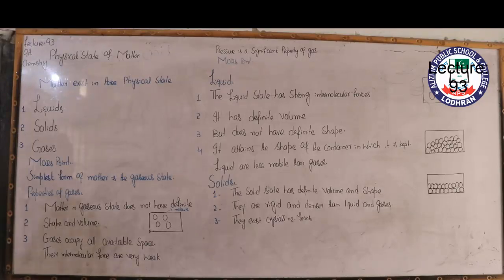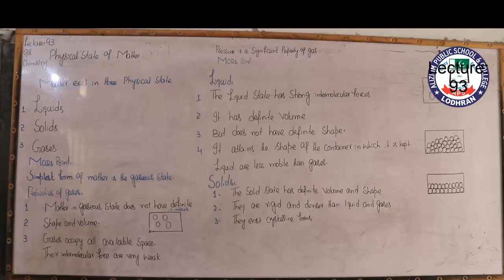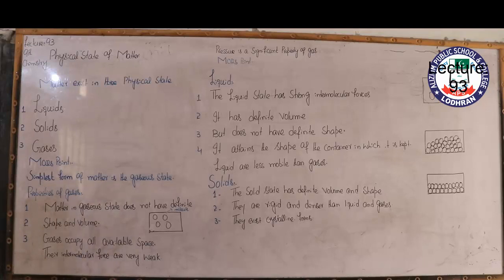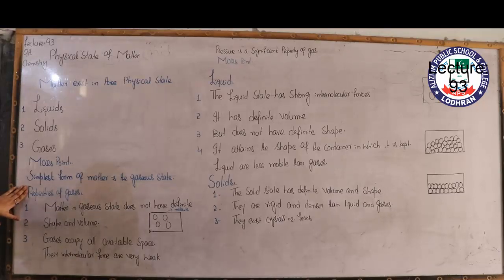In your book, the three physical states of matter are listed: number one liquid, then solid, and then gases. An important MCQ point here is that the simplest form of matter is in the gaseous state, and the most stable one is also gaseous. After that we describe the properties of gases.